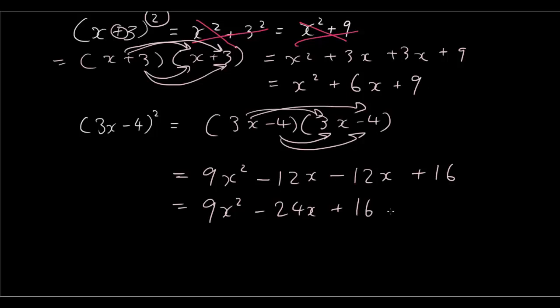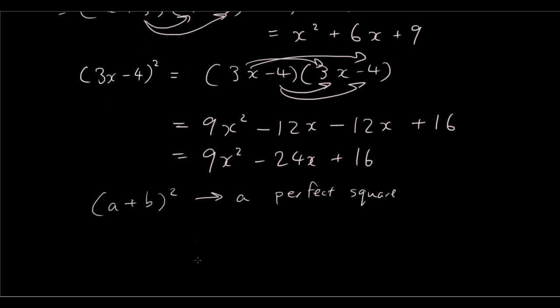And a general formula that people have found from expanding these perfect squares, which we call it - so when you have something like this, a plus b squared, we call that a perfect square. And people have found that when you expand something in the format of a plus b squared, it usually gives you a squared plus 2ab plus b squared.